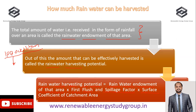We also have to consider evaporation and other spillage factors in the calculation. Additionally, we multiply by the surface coefficient of the catchment area — whether it is a concrete surface, tile roofing, road surface, or any specific metal surface. This surface coefficient changes based upon the surface type, and we will see how to apply this factor in the calculation.